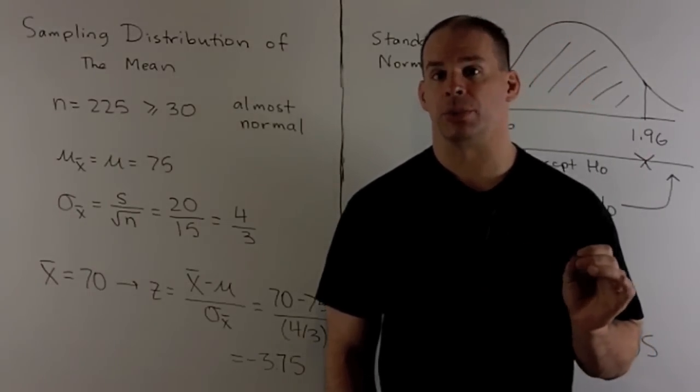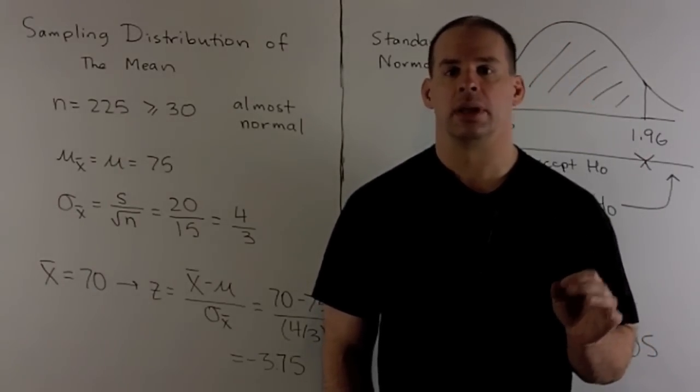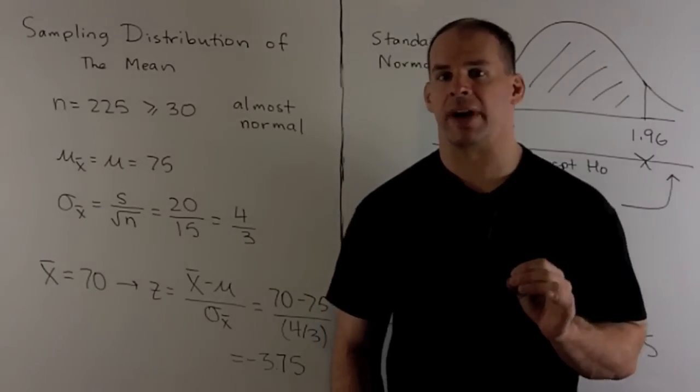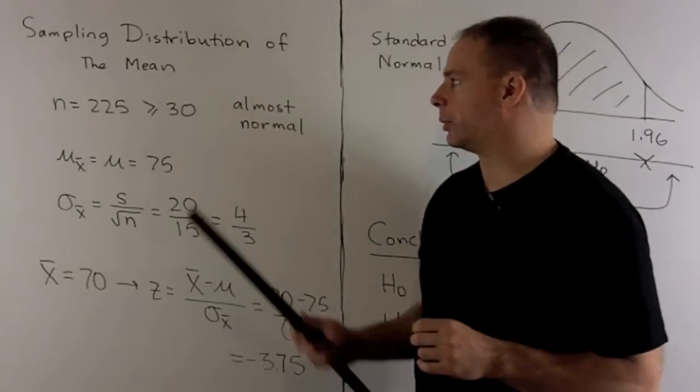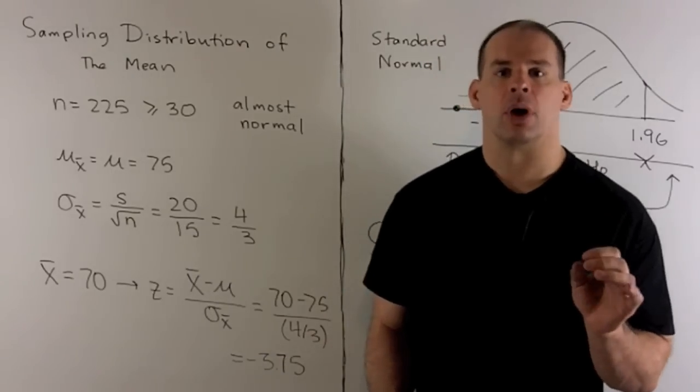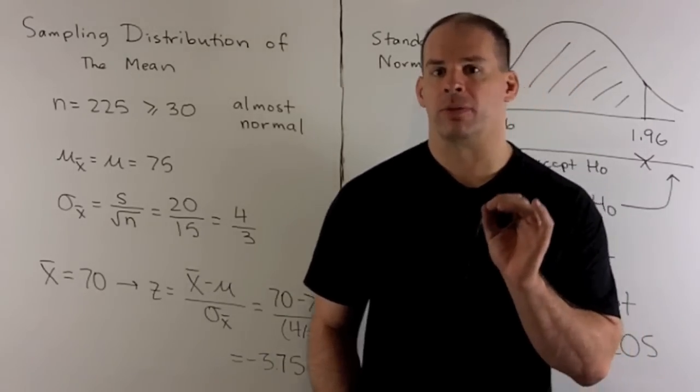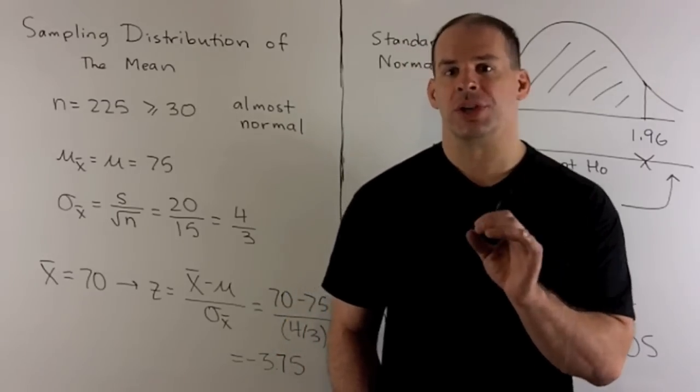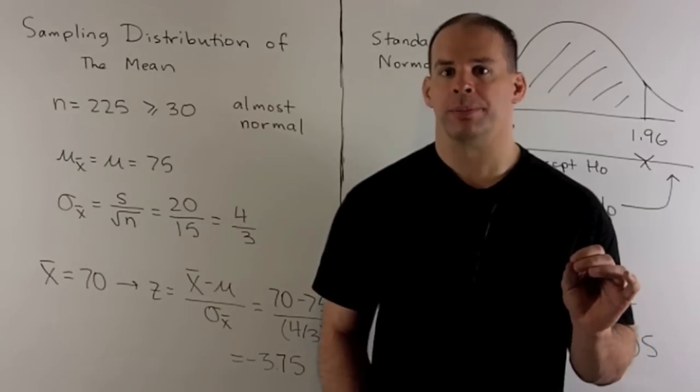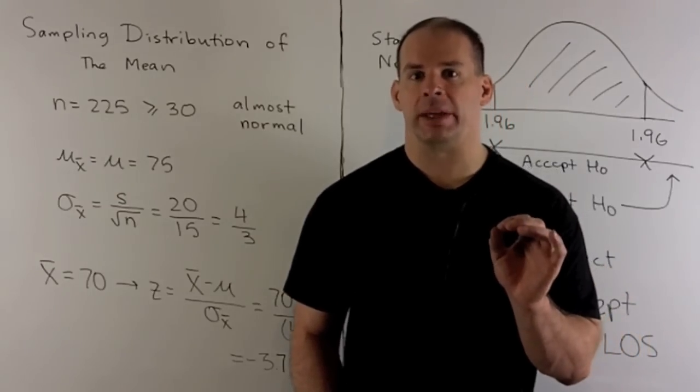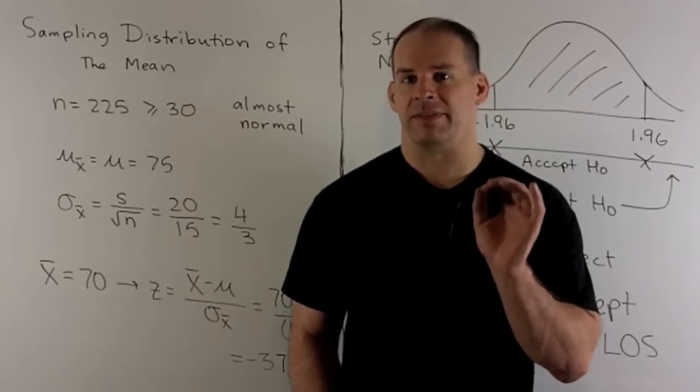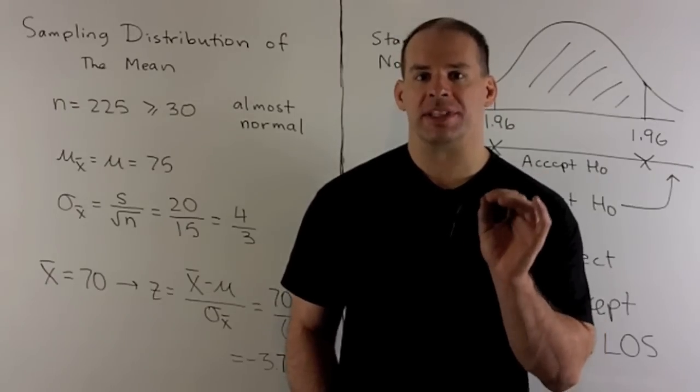Let's look at our sampling distribution for the mean. N is equal to 225. That's greater than or equal to 30. So our distribution is almost normal. The way we'll perform our test, we're going to use a standard normal distribution. We're going to take our sample mean, we'll find its z value, and then that's the number we test with.